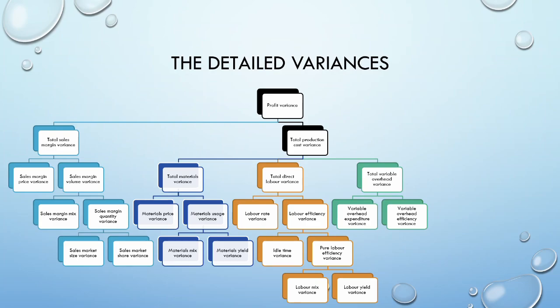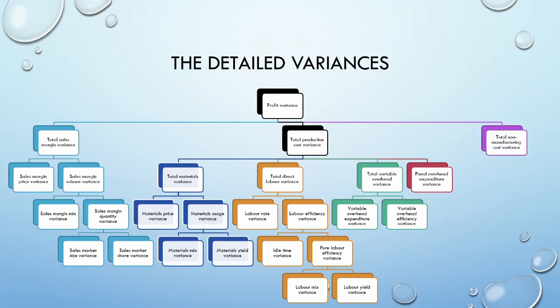Finally, if we have multiple classes of labor that are interchangeable, we can again calculate a mix and yield variance. We then have our variable overhead variance, which can be broken down into an expenditure and efficiency variance. Our final production cost variance is the fixed overhead expenditure variance. We will have a lot more fun with this variance when we consider absorption costing later on.